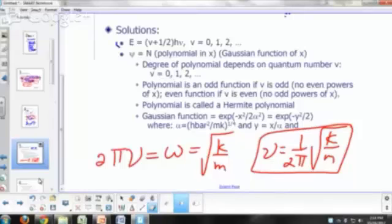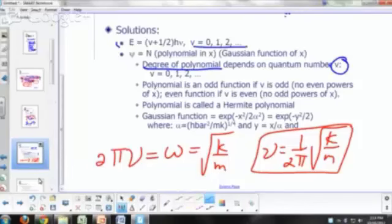Now the degree of the polynomial depends on the quantum number V. The quantum number V is restricted. It can only be 0, 1, 2, 3, 4, and so on. So this is different from the particle in a box where N equals 1, 2, 3, and so on. Quantum number V can actually be 0.